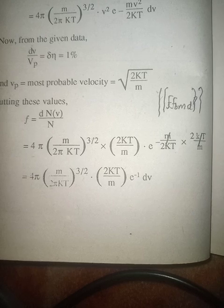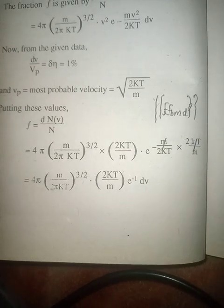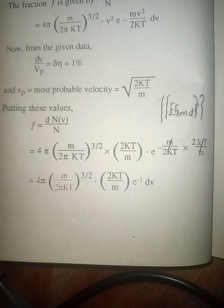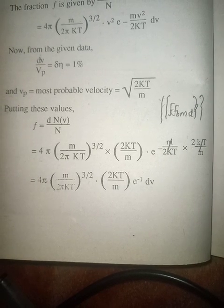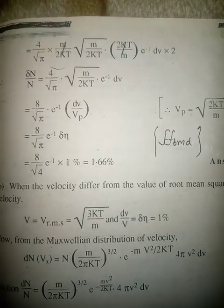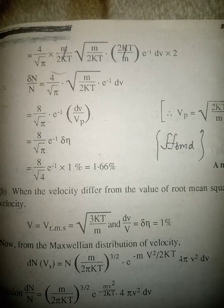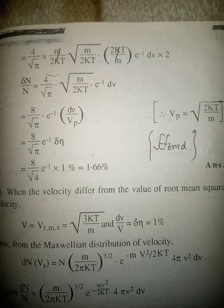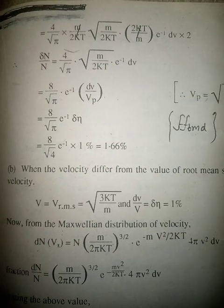f = 4π(m/2πkT)^(3/2) × (2kT/m) × e^(−m/2kT × 2kT/m) dv, which simplifies to 4π(m/2πkT)^(3/2) × (2kT/m) × e^(−1) dv. Further simplifying: 4√π × (m/2πkT) × √(2kT/m) × (2kT/m) × e^(−1) dv × 2, hence ΔN/N equals...